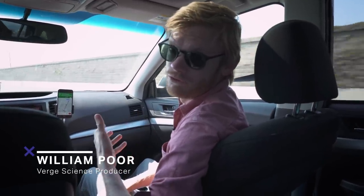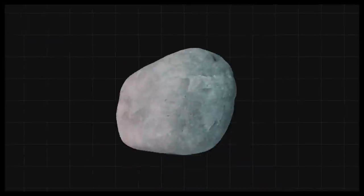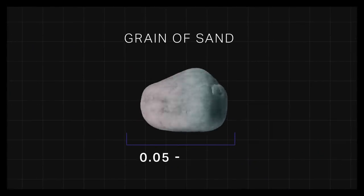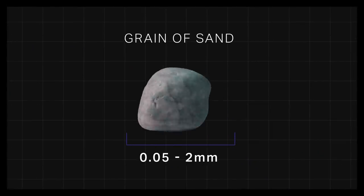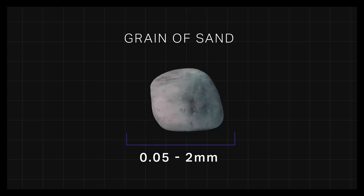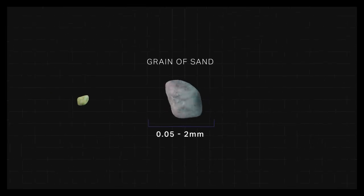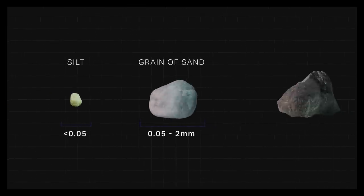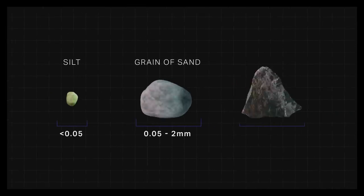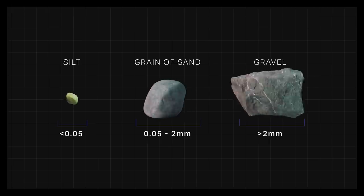The definition of sand is really broad. It can be made out of any kind of rock or mineral. What makes sand sand is really size — each grain is somewhere between 0.05 millimeters and 2 millimeters across. Smaller than that and it's silt; larger, and it's gravel.